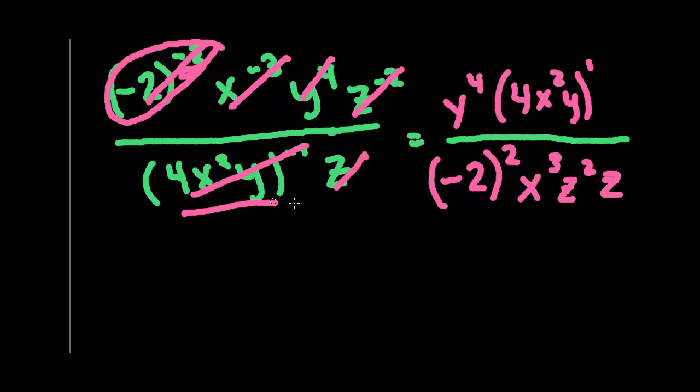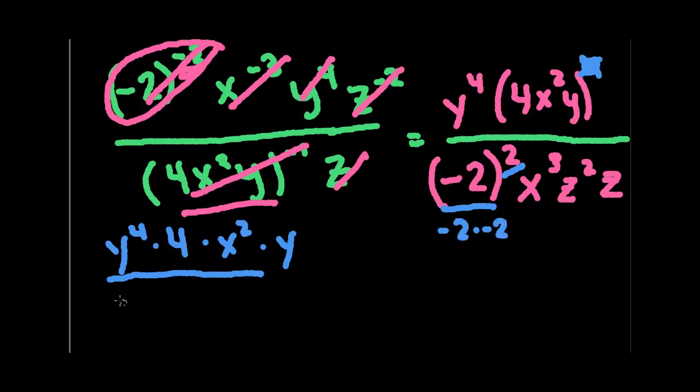Alright, so now we're going to take it to the next step. And you can see it's not that difficult if you take it step by step. So distributing a 1 to each of these guys is just multiplying each of the power by 1. So we don't have to actually do anything there. That's just going to take everything out of parentheses because anything to the first power is itself. So we're going to end up with y to the 4th times 4 times x squared times y. Negative 2 to the second power is negative 2 times negative 2, which is positive 4. And we have x to the 3rd, z squared, z.